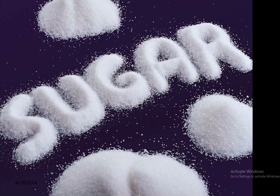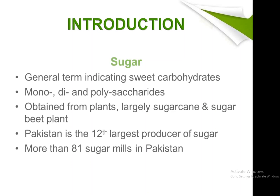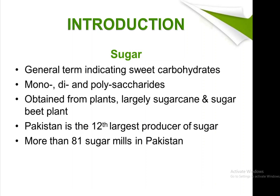Welcome to our YouTube channel School of Engineering. Here we are with a new video on the sugar manufacturing process in the sugar industry. Sugar is a general term indicating sweet carbohydrates — mono, di, and polysaccharides — obtained from plants, largely sugarcane and sugar beet. Pakistan is the 12th largest producer of sugar with more than 81 sugar mills.